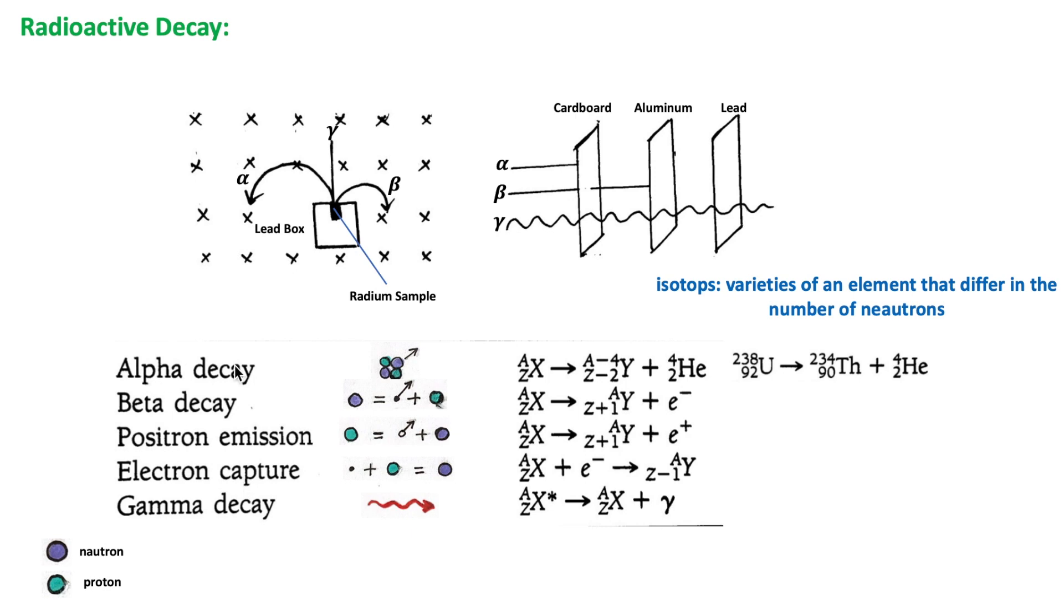An example of alpha decay is when a uranium nucleus of mass number 238 decays into a thorium nucleus of mass number 234. This shows that elements are not unchangeable, and that one element can change into another element.